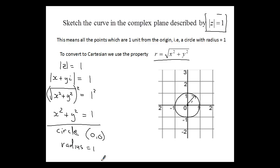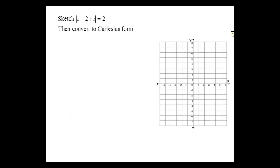Any equation in the form modulus of Z equals a constant is always going to be a circle. Now let's have a look at this one: the modulus of Z minus two plus i equals two. We want to sketch it first and then convert it into Cartesian form.